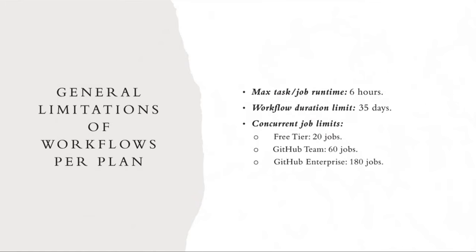These are the general limitations of a workflow, which differ between plans. Maximum job runtime is about six hours for all plans. The maximum workflow duration is 35 days for all plans. Concurrent jobs — jobs that run in parallel — are 20 for the free plan, 60 for GitHub Team, and 180 for GitHub Enterprise.